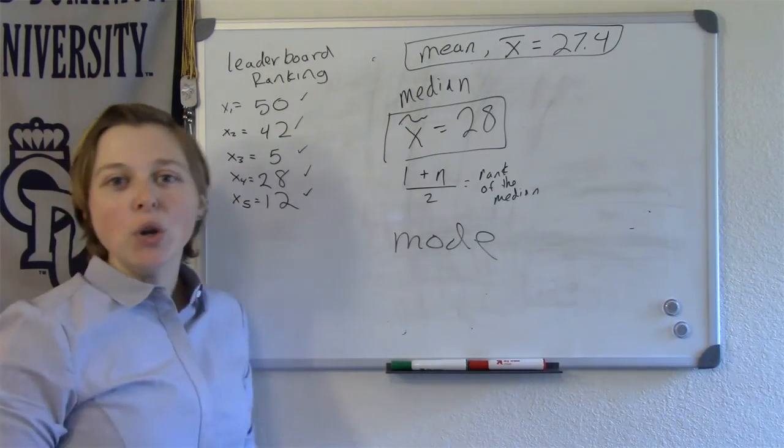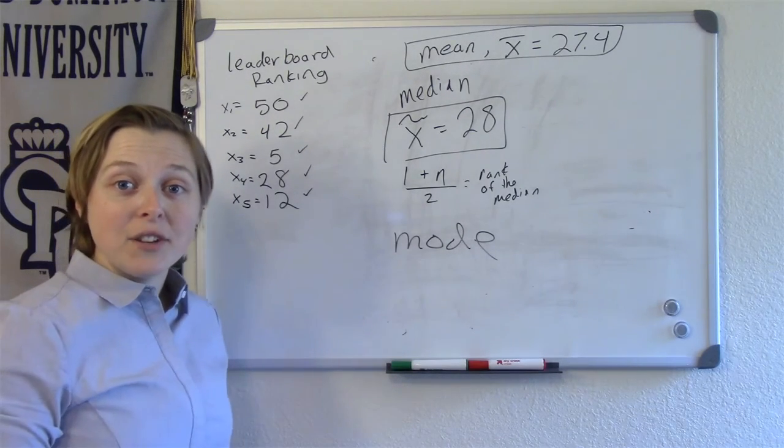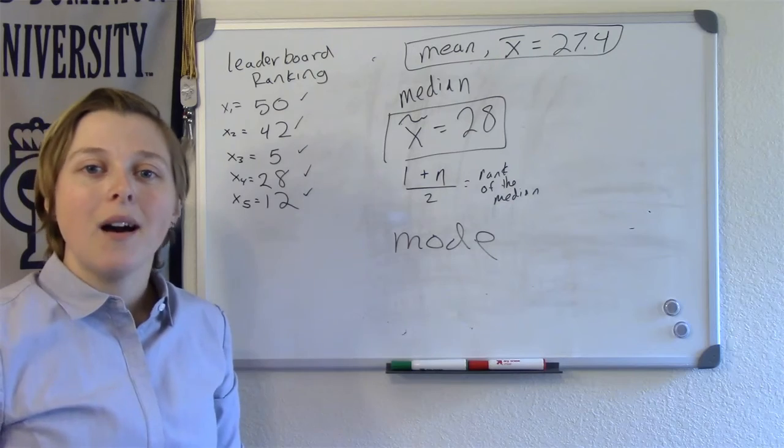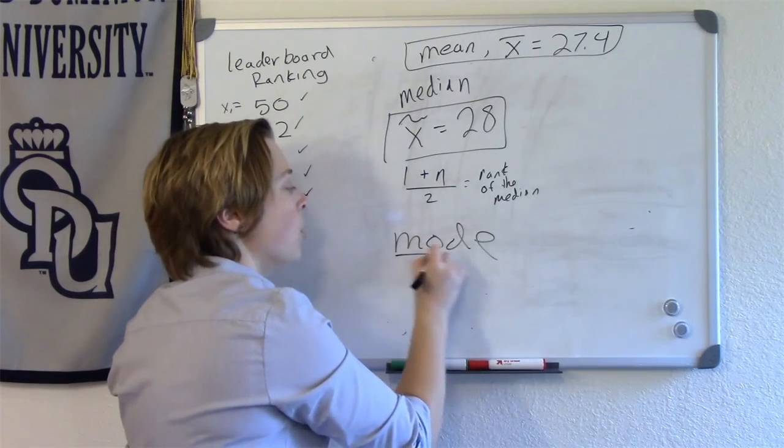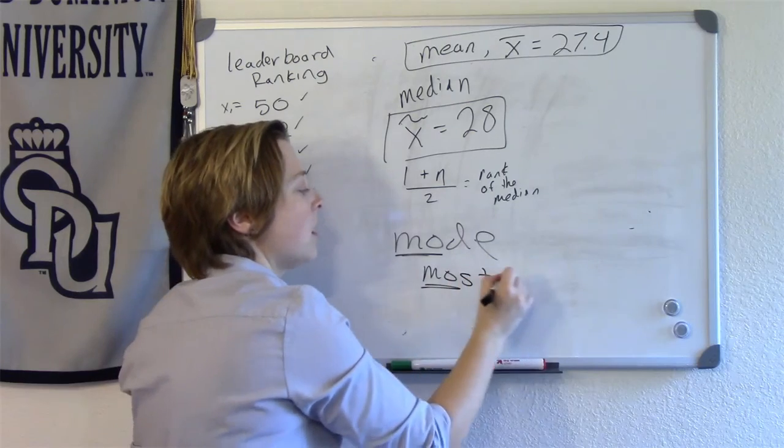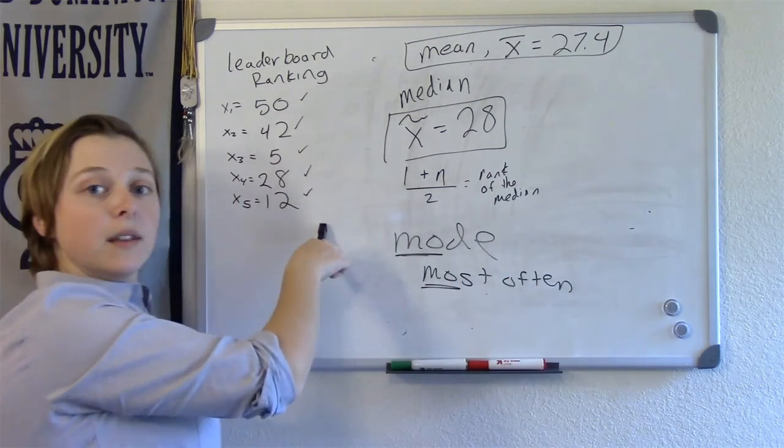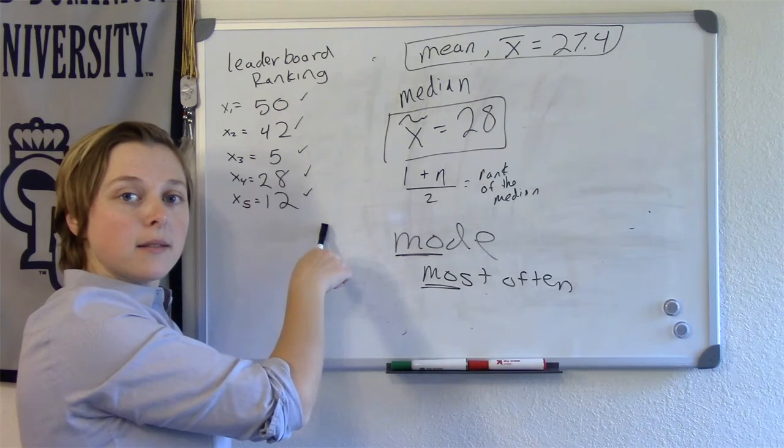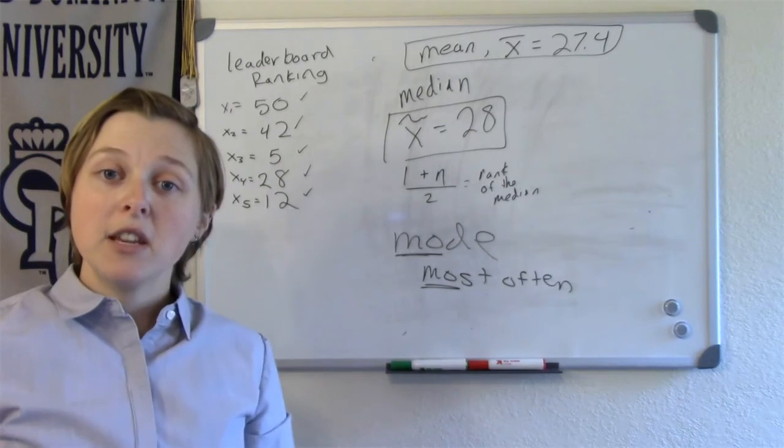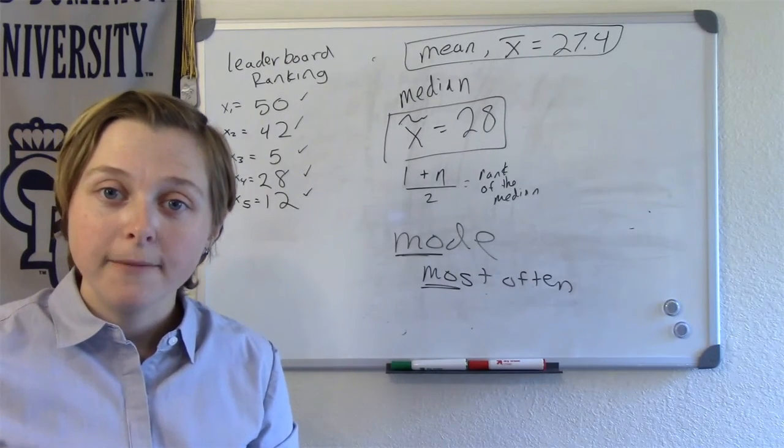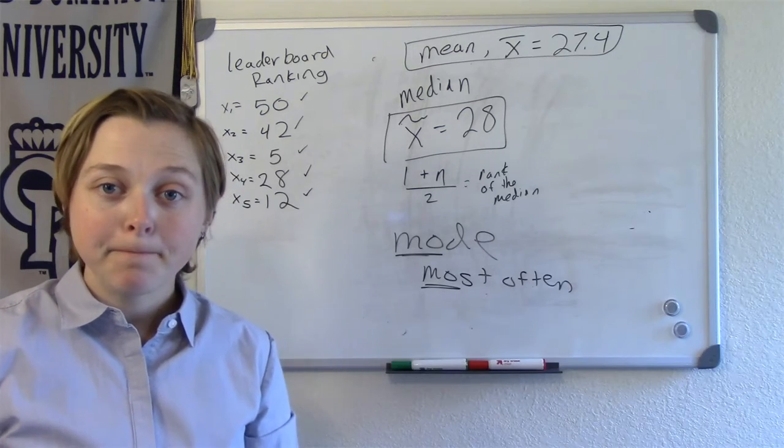Last measure of the center that we are going to cover in this class is the mode. What is mode? It's the data observation that occurs the most often. So you think mode, you think most often. Any of these occur more than once? No. Since no observation is occurring most often, then there is no mode to this data.